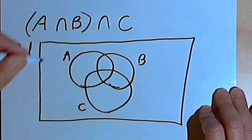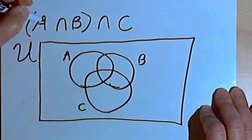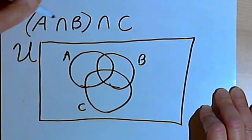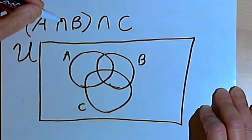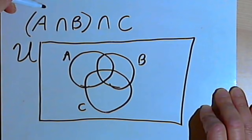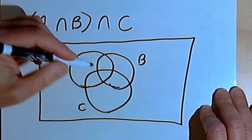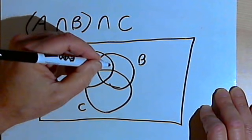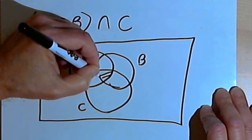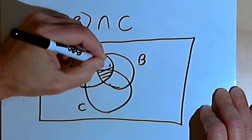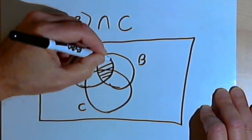The first thing I'm looking for is the part in parentheses — the intersection of sets A and B. The intersection of sets A and B is going to be the place where A and B overlap, so I'm going to shade that in.